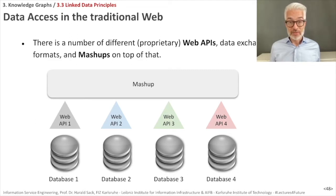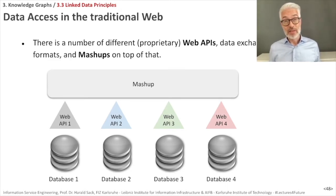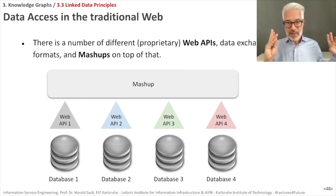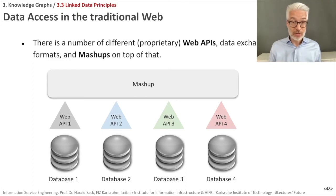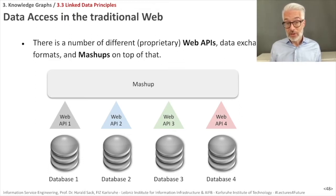The point is that the APIs used by different websites — say, an API to access eBay and another to access Google search results — are all proprietary, meaning they are all different. You can combine them in a large mashup application that accesses different services. But as soon as one of these services changes its API definition so that data is delivered in another way, you have to completely change the programming of your mashup as well. This is a huge effort.